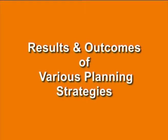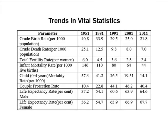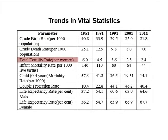Next is results and outcomes of various planning strategies. The results or outcomes of various family planning strategies over more than five decades are depicted in Table 13. The crude birth rate declined from 40.8 in 1951 to 21.8 in 2011, and the total fertility rate per woman also declined from 6 to 2.4 due to the various measures adopted to control births.